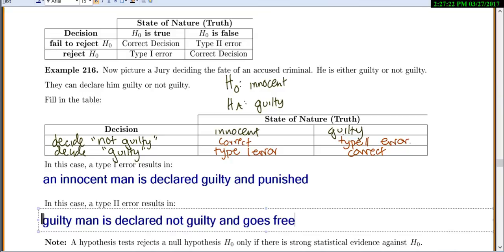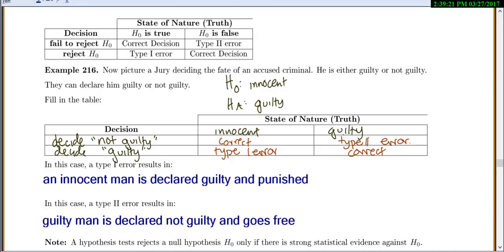You have to decide which type of error would be worse. If you're trying to decide which kind of error would be worse, it's kind of a personal decision. It's not a statistical answer here. But most of the time, most people would say it would be worse to see an innocent man who was declared guilty and punished.